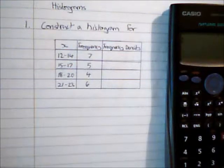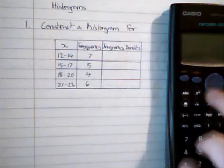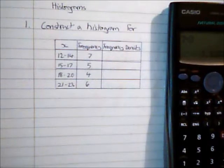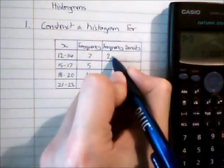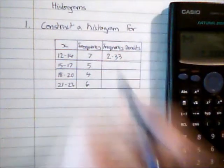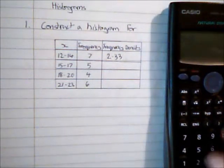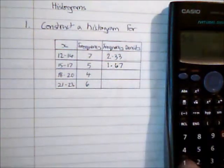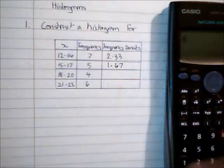A similar measure is going to be needed at either end of each of these groups, so my class width for the first category actually goes from 11.5 to 14.5. So I'm going to do 7 divided by 3, so 7 being the frequency and 3 being the class width, to give me 2.33. And then if I repeat this procedure for my other values, I'm going to find each of these.